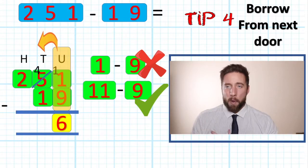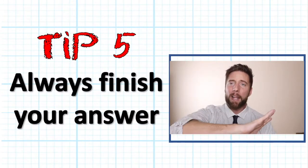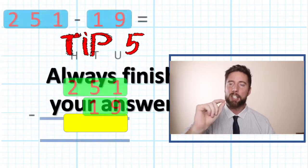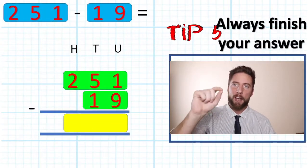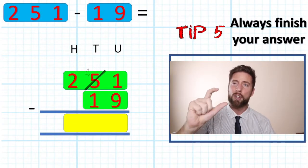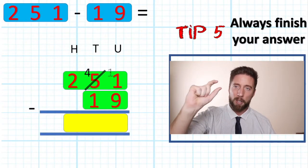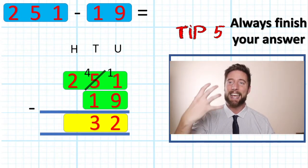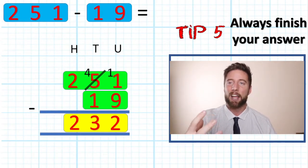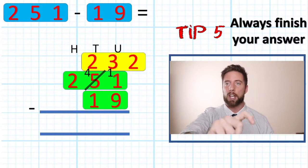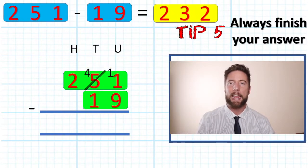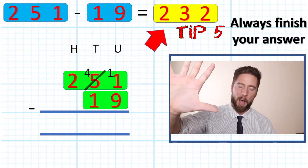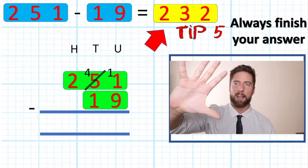Tip number five: complete your question. Don't forget to always finish your number sentence. 251 subtract 19 needs an answer — give it the answer. Don't just leave it there in the answer row. Tip number five: always finish your answer.